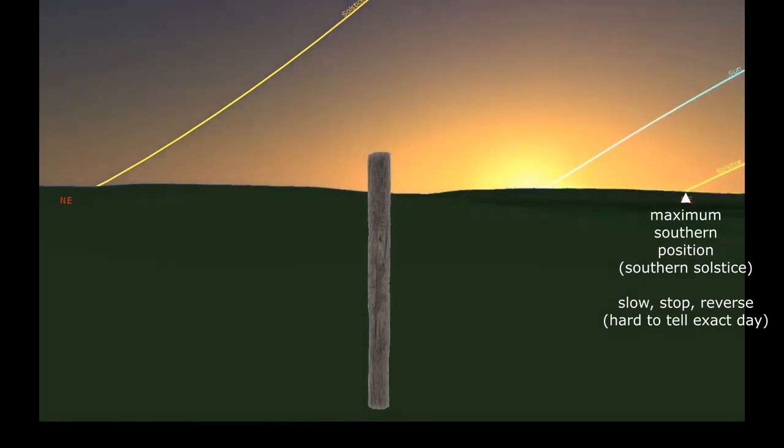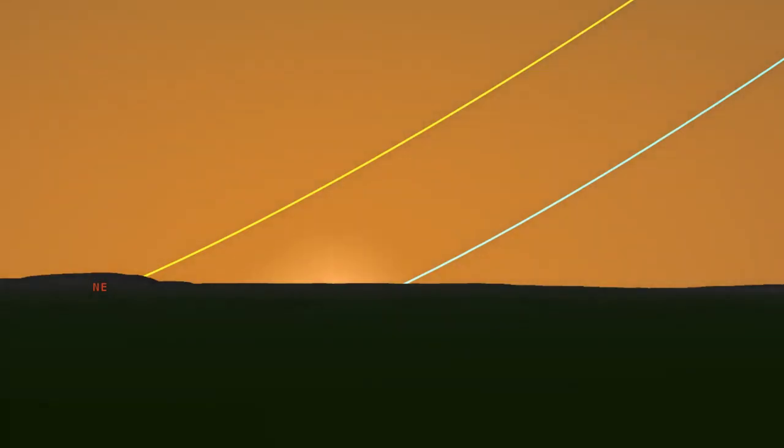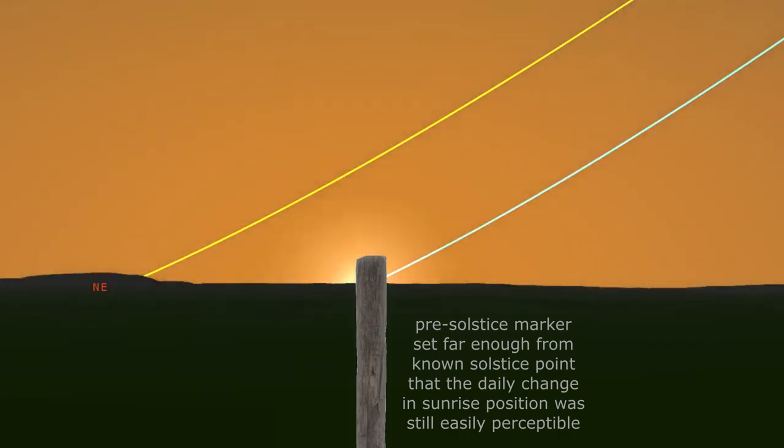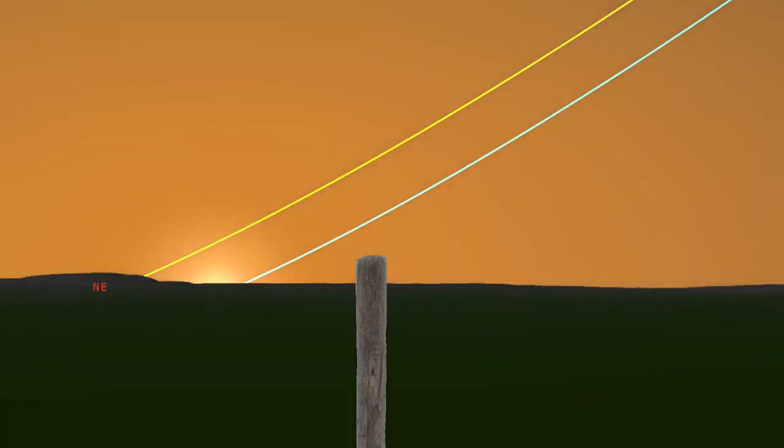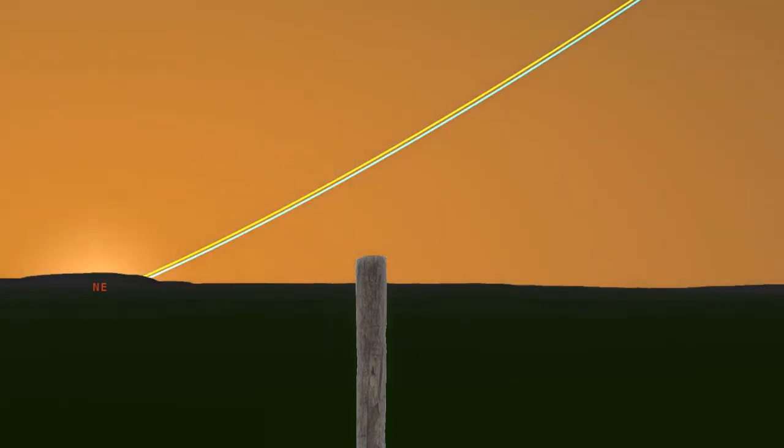However, this apparent slowing and stopping would make it hard to know exactly when to start and stop counting. This could easily be overcome by setting up a marker for a position earlier than the solstice, when the daily change in the Sun on the horizon was still perceptible, and then counting the days from the marker to the stopping position and back. Half of that interval is how many days have passed since the solstice, and the same procedure could be used to adjust the count at the end of the cycle.